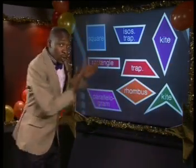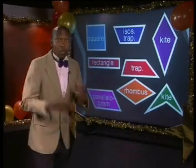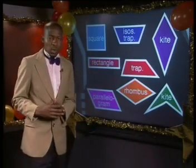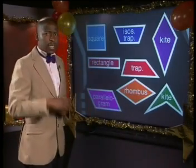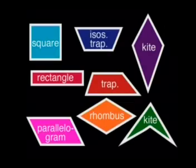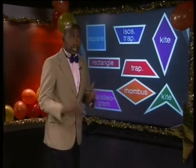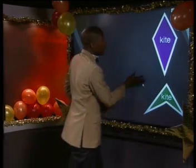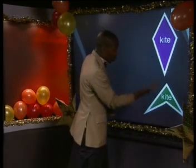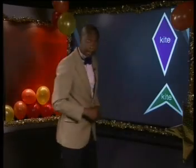Which of these shapes have adjacent sides equal, but not opposite sides equal? The answer is the convex and the concave kites.